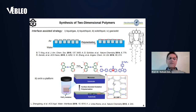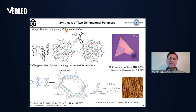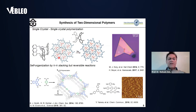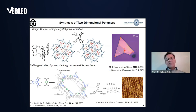The second method is single crystal polymerization. In this method, we first produce a single crystal of a monomer, and then by a stimuli factor like UV radiation, we polymerize monomers inside this single crystal. We then exfoliate this polymerized crystal to get mono- or few-layer two-dimensional polymers.